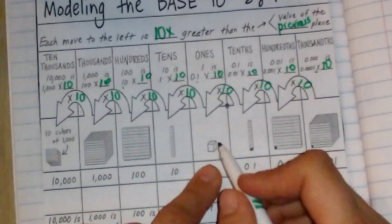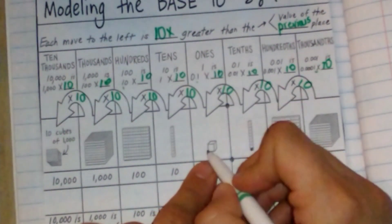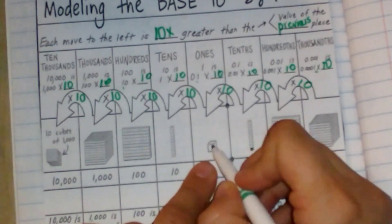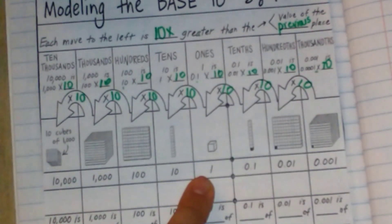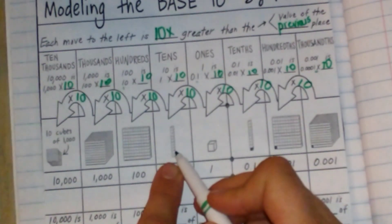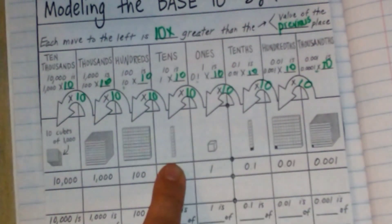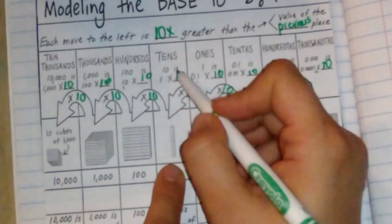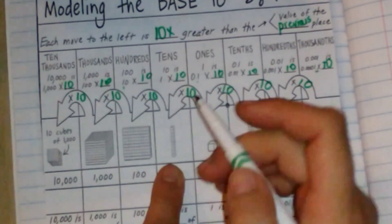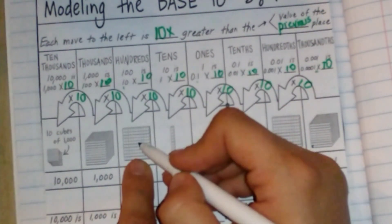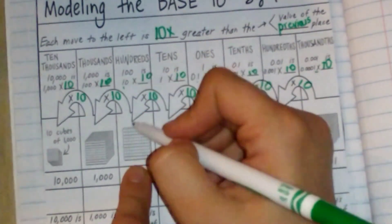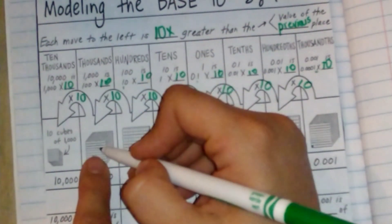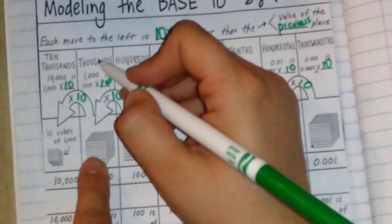If we look here, this is a base 10 block. One small block is one. We have ten on top. We have one block — we multiply it by ten, and we have ten. That's exactly what this says. I have ten of these and I get a hundred. I put ten of these together and I'll get ten thousand.